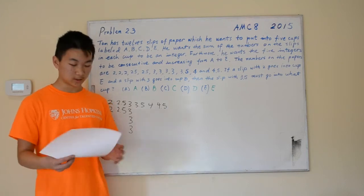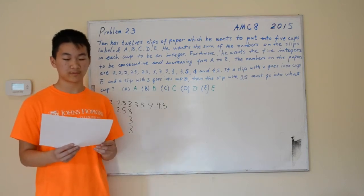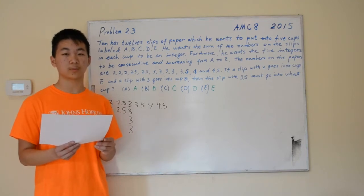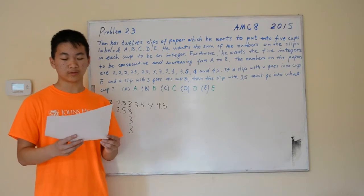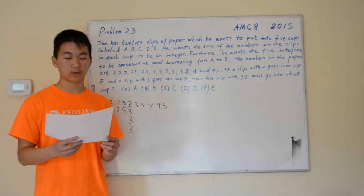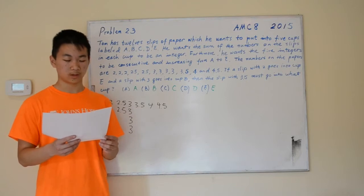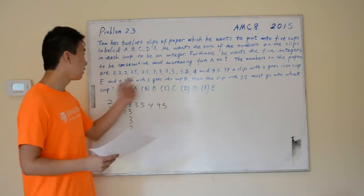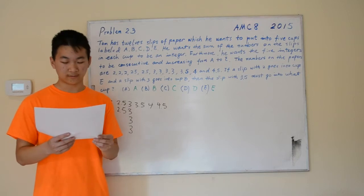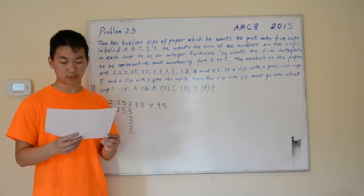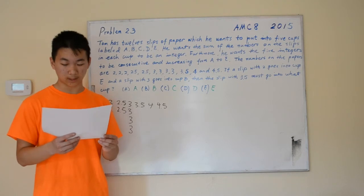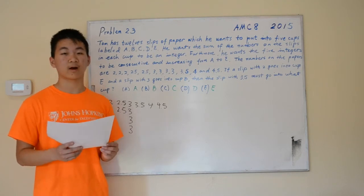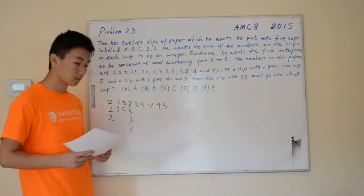So the problem reads: Tom has 12 slips of paper which he wants to put into 5 cups labeled A, B, C, D, and E. He wants the sum of the numbers on the slips in each cup to be an integer. Furthermore, he wants the 5 integers to be consecutive and increasing from A to E. The numbers on the paper are these 12 numbers, and if a slip with 2 goes into cup E, and a slip with 3 goes into cup B, then the slip with 3.5 must go into which cup?